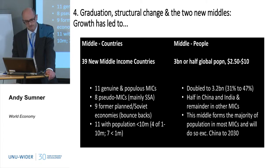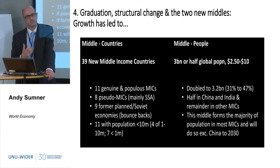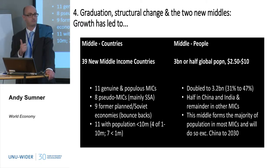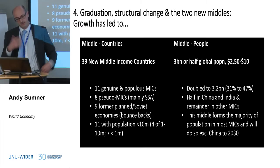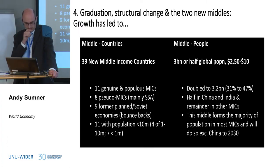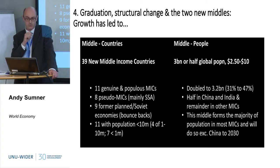There are almost 40 new middle-income countries, split quite evenly between four groups: around 11 genuine countries in terms of genuine development; eight pseudo-mix which are in sub-Saharan Africa — better off in exchange-rate income per capita but not in PPP GDP per capita, possibly because growth was driven by commodities; nine former planned economies which are essentially bounce-backs; and another 11 quite small countries. On the other side, we now have three billion people in this middle — half the world's population, neither poor nor secure from poverty — with half that number in China and India, the rest in other parts of the world.